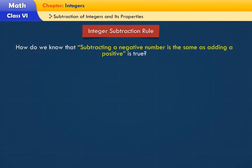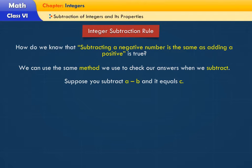How do we know that subtracting a negative number is the same as adding a positive is true? We can use the same method we used to check our answers when we subtract. Suppose you subtract a minus b and it equals c. To check if your answer is correct, add b and c.